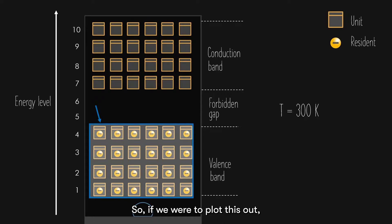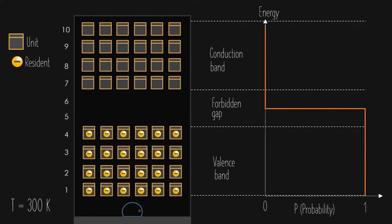So, if we were to plot this out, with energy being the y-axis, and the probability of an electron to exist at a particular energy level to be the x-axis, it would look something like this. The 7th to 10th floor corresponds to a probability of 0. The 1st to 4th floor corresponds to a probability of 1.